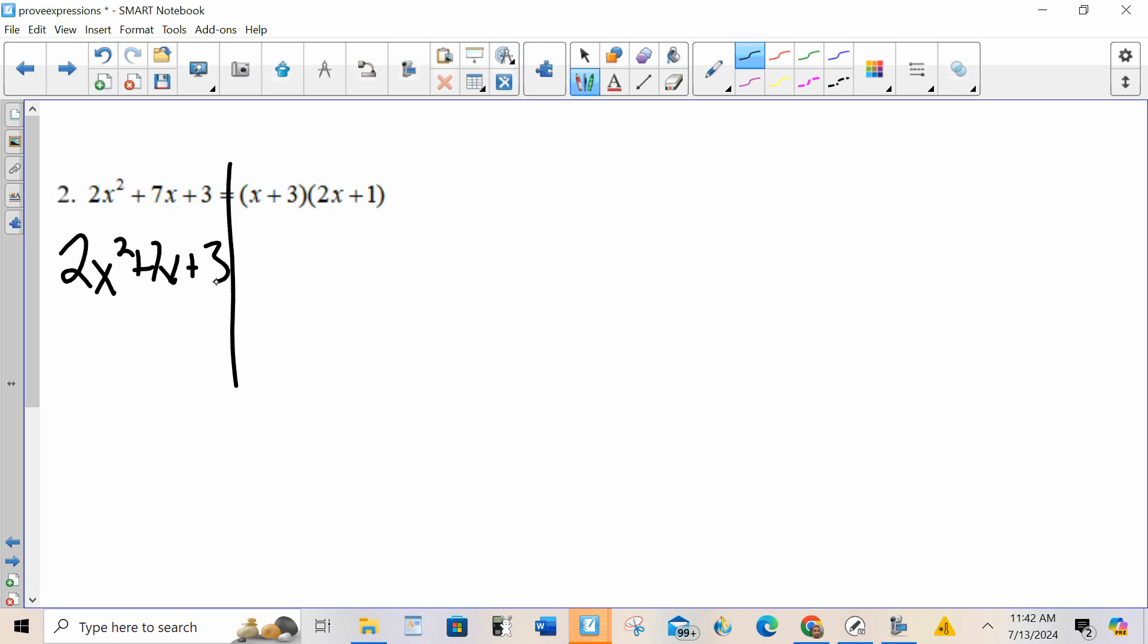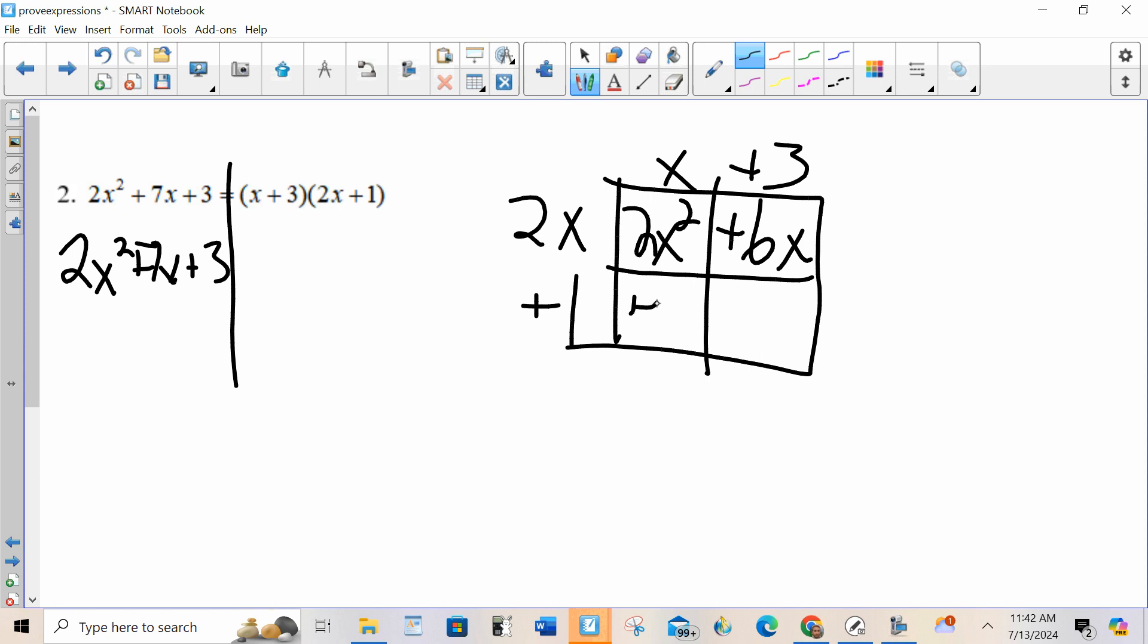My right-hand side I'm multiplying. So to multiply I do my box method. x plus 3, 2x plus 1, 2x squared plus 6x plus 1x plus 3. Combine like terms. 2x squared plus 7x plus 3.